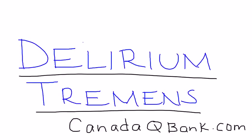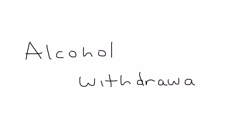Delirium tremens is a topic, often abbreviated DTs. DTs are essentially what we're talking about in this video: alcohol withdrawal. Alcohol withdrawal has a series of symptoms and presentations, and what I'm going to try to do is break it down into the four stages or four types.